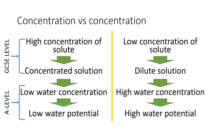At GCSE we can use the terms 'low water concentration' and 'low water potential' — these are mostly used at A-level, but there's no reason you can't use them at GCSE. You've got to be clear in your mind which one's which. If you've got a high concentration of solute, we refer to that as a concentrated solution, which means it has a low water concentration — and we can replace 'water concentration' with the words 'water potential'.